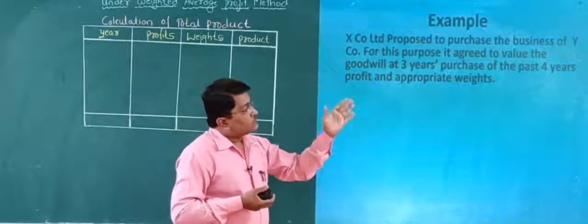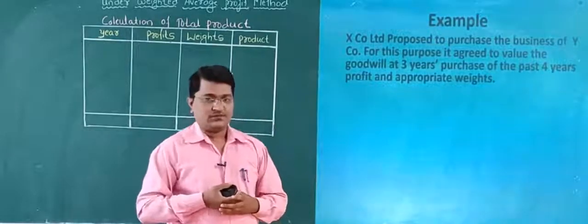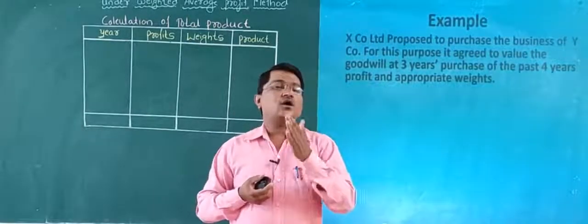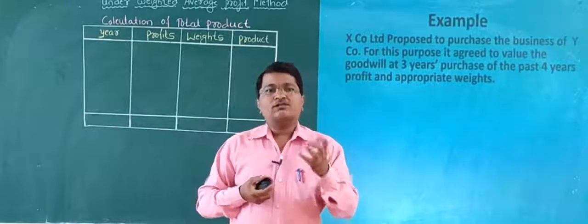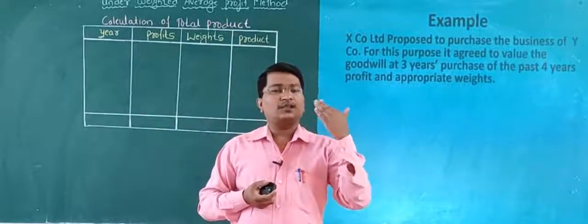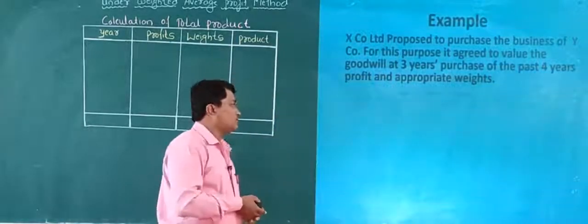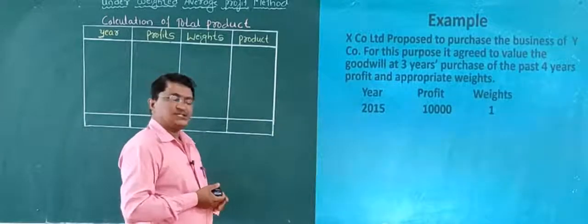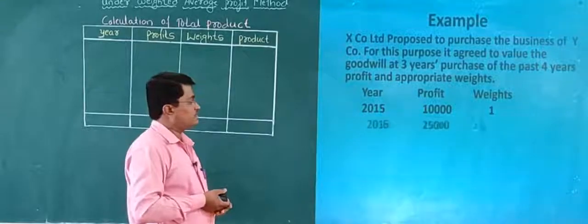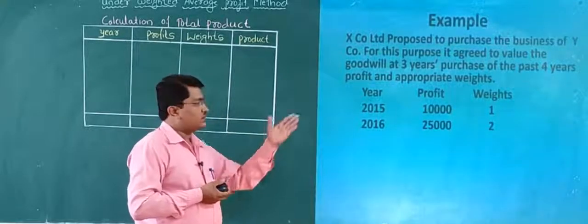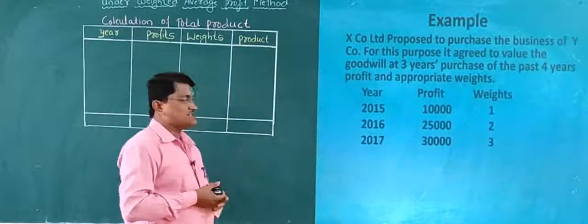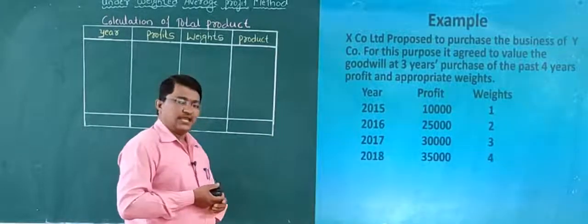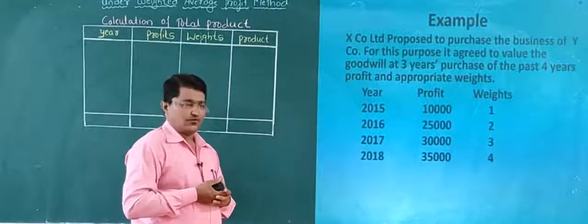The goodwill is to be calculated based on the past four years' profits with appropriate weights. The data is: Year 2015 — profit 10,000, weight 1; Year 2016 — profit 25,000, weight 2; Year 2017 — profit 30,000, weight 3; Year 2018 — profit 35,000, weight 4. Calculate the value of goodwill under weighted average profit method.